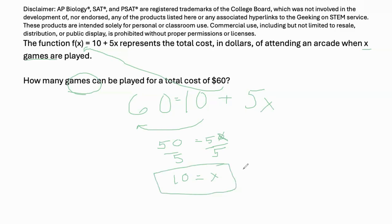So this is an example where using Desmos — typing in 60 equals 10 plus 5x and trying to calculate manually — might actually take more time than simply using straightforward math. I hope this problem helps explain how using Desmos might not always be efficient, even for simple math problems.